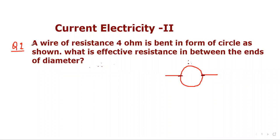Current electricity part 2. Question number 1: A wire of resistance 4 ohm is bent in form of a circle as shown. What is effective resistance in between the ends of diameter?